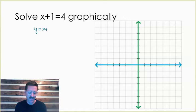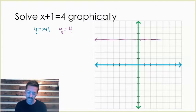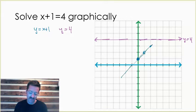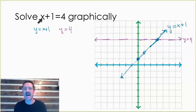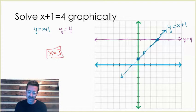We can look at this like two different graphs: y equals x plus one, and y equals four. The solution to this equation is where those two graphs intersect. I'll graph y equals four in purple — a horizontal line through four — and then y equals x plus one, which has a y-intercept of one and a slope of one. The x value where they intersect is the solution, and that x value is x equals three.